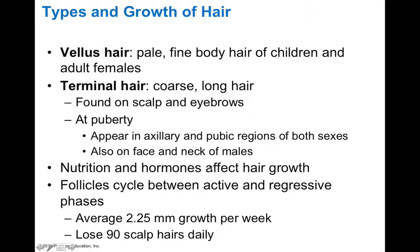Nutrition and hormones do affect hair growth, so if individuals are having abnormalities in hair growth, this could reflect hormonal or nutrient disturbances. The follicle cycles between active and regressive phases. You lose about 90 scalp hairs a day, and hair grows about 2.25 millimeters per week.